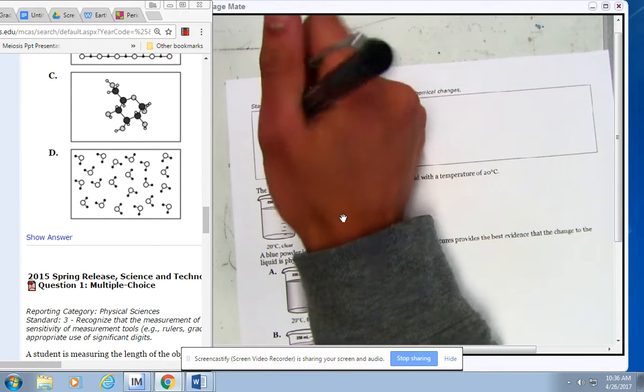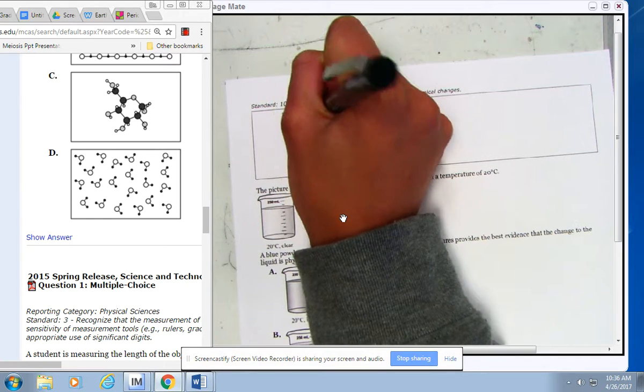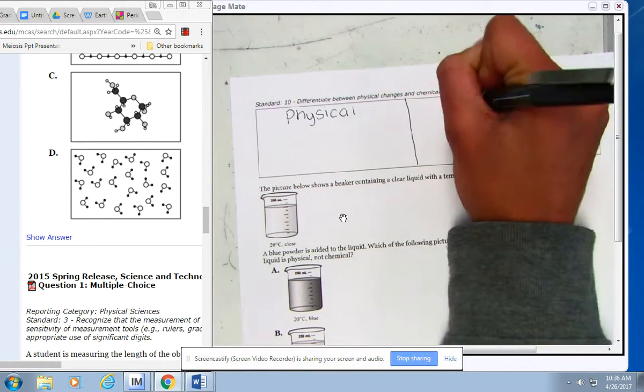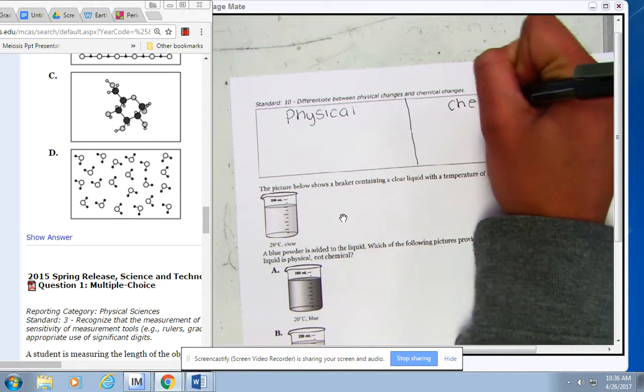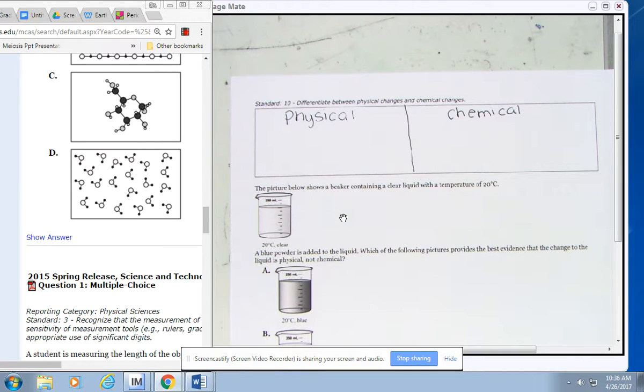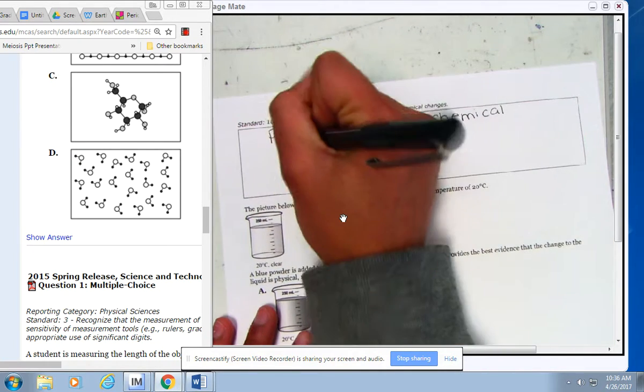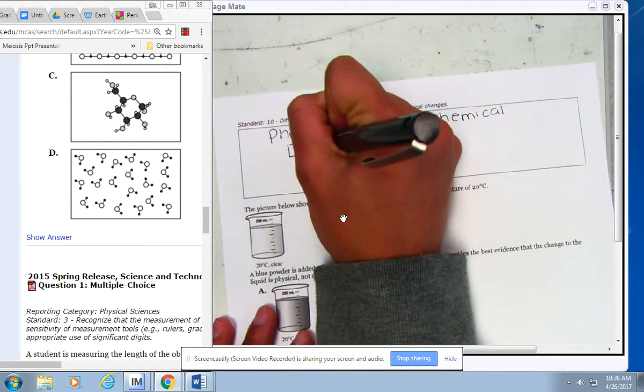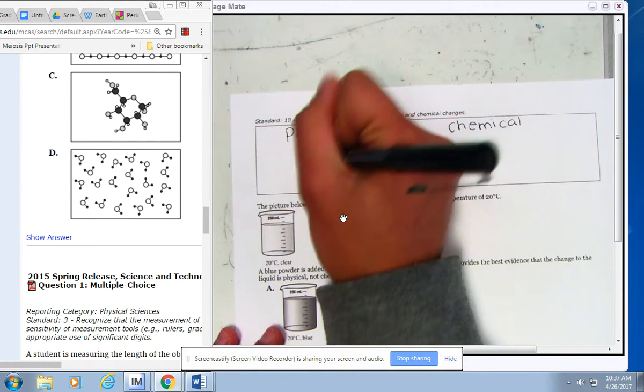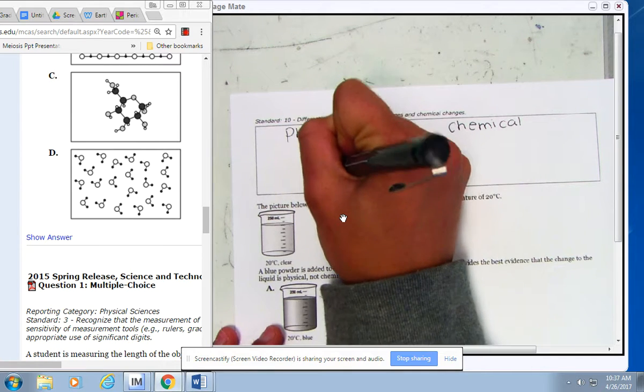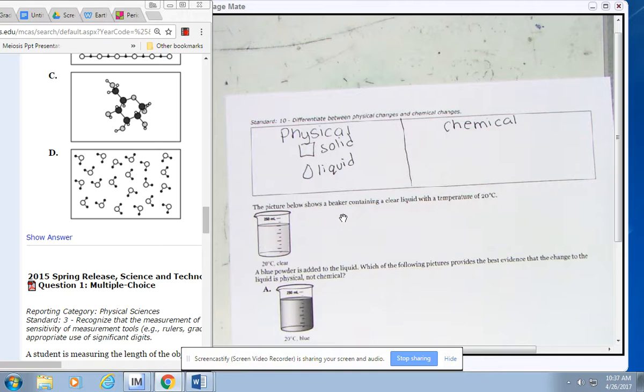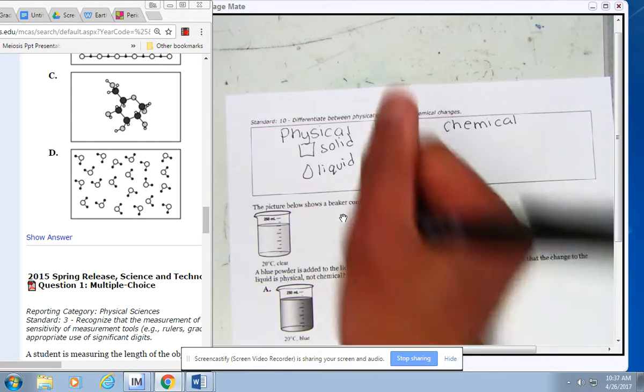The difference between physical changes is when you have water, which is liquid, but when you freeze it, it turns into a solid. And then when you unfreeze it, it's still water. It's reversible.